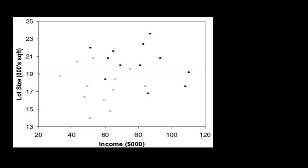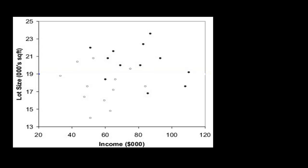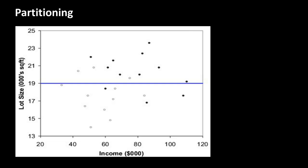This is the complete scatter plot of all the cases we have. We are able to do this because we've got only two dimensions; beyond that, we won't be able to visualize it. What we really want to do is partition this because, after all, the decision tree partitions the cases again and again. So for example, this is an example of a partition — we've drawn a line at 19 on the lot size, dividing all cases into two groups.